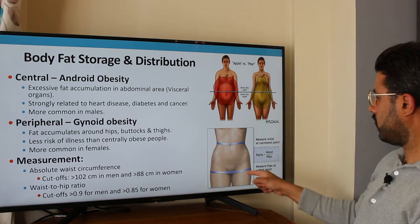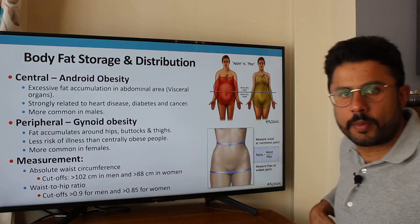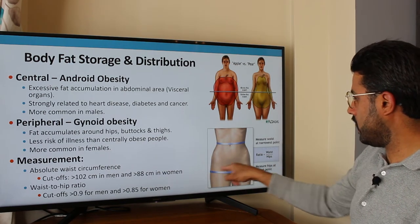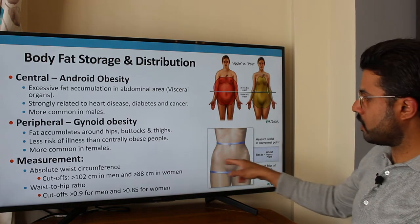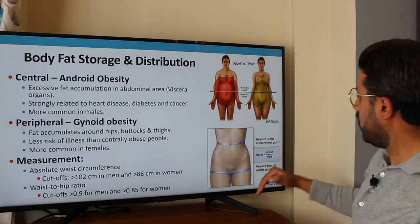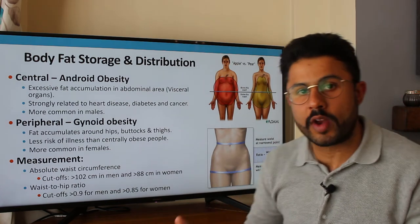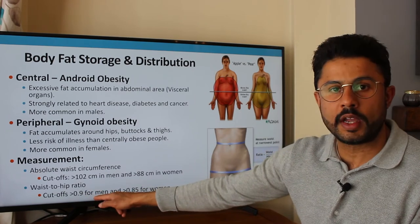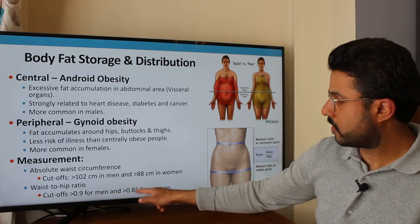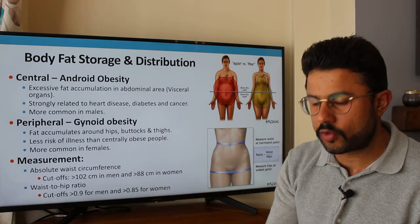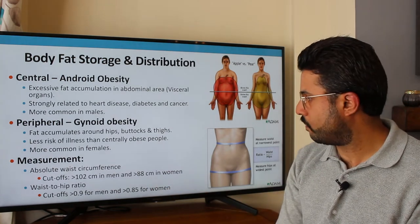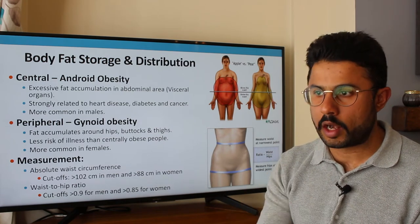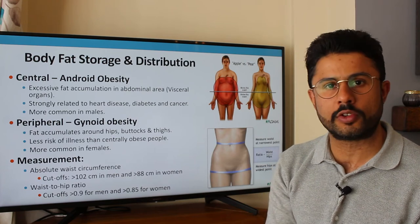To calculate the waist-to-hip ratio, measure your waist at the narrowest point and your hips at the top of the iliac crest — near the hip bone or pubic area. Take those two readings, divide the waist by the hips, and you'll get a ratio. If your ratio is greater than 0.9 for males, or greater than 0.85 for females, you're at greater risk of central obesity and should get onto a lifestyle program to address that as soon as you can.